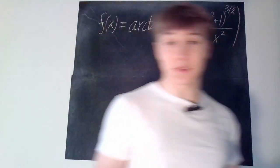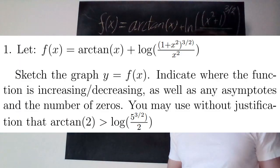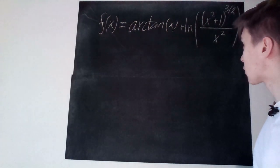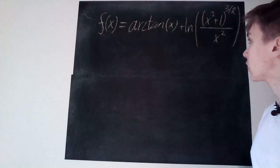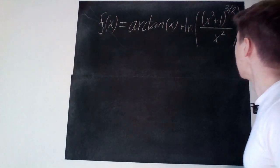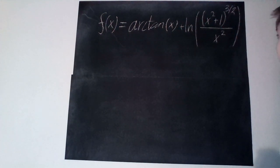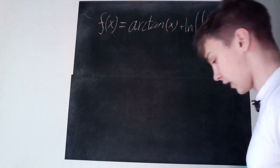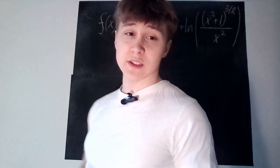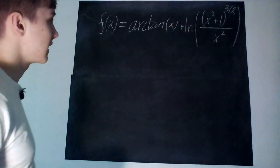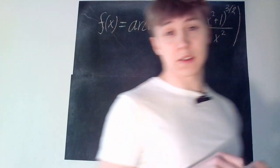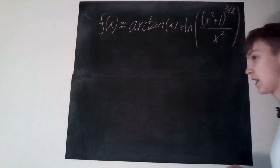I'll put it up on the screen. As you can see, we have a function: it is arctan(x) plus ln of (x² + 1), everything to the power of 3/2, and then divided by x². We are supposed to sketch this graph, find any asymptotes, and find out how many roots this function has.